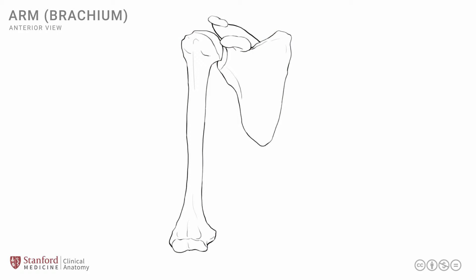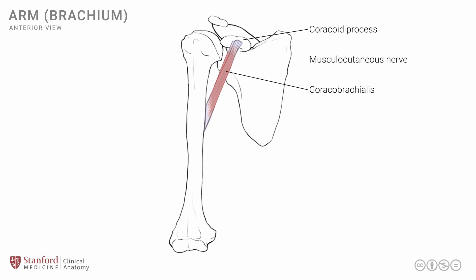Here we have a simple line drawing showing the scapula and the humerus, and we will look at the anterior muscles of the arm. To orient ourselves, we identify the coracoid process. The coracobrachialis has its attachment proximally onto the coracoid process, and the fibers go laterally and inferiorly to attach onto the mid-shaft of the humerus on the medial side. This muscle is minor in terms of function, but it's a very important landmark muscle when performing surgery in this anatomical region. The musculocutaneous nerve, a branch of the brachial plexus, travels in this region, pierces the coracobrachialis muscle, supplies it, and continues on its way to supply other muscles in the arm.